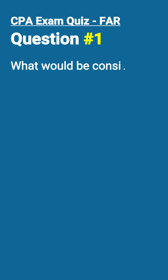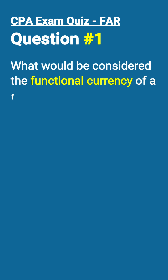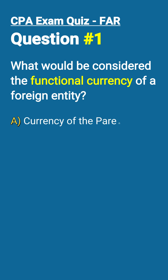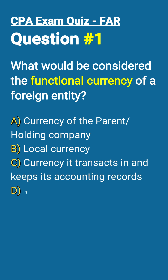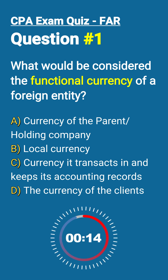Question number one: what would be considered the functional currency of a foreign entity? A. Currency of the parent holding company. B. Local currency. C. Currency it transacts in and keeps its accounting records. D. The currency of the client.